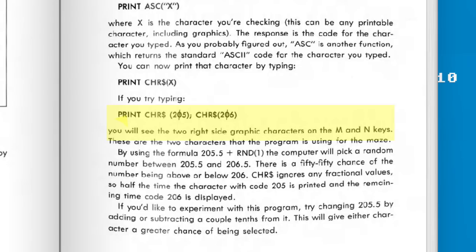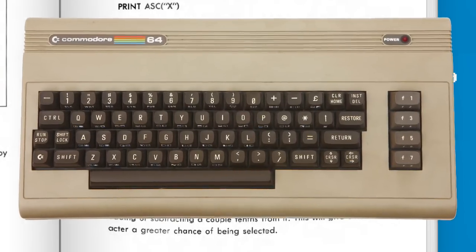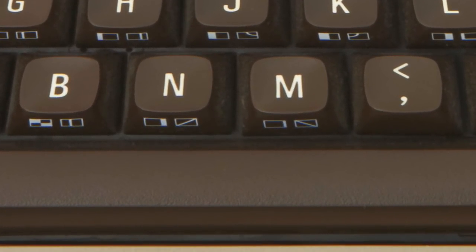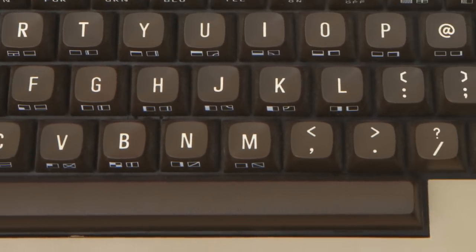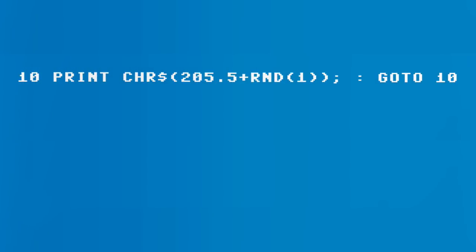The listing says that CHR$(205) and CHR$(206) produce two 'right side graphic characters' on the M and N keys. Looking at the actual Commodore 64 keyboard, we can see those are the equivalent of a forward slash and a backslash — two diagonal graphic characters. So each time CHR$ is called, it's going to return either that forward-slash graphic or the backslash graphic.